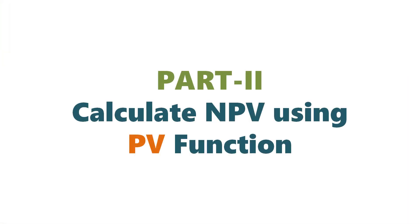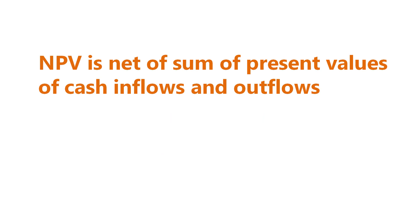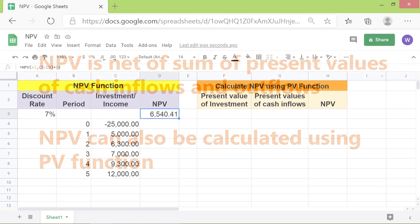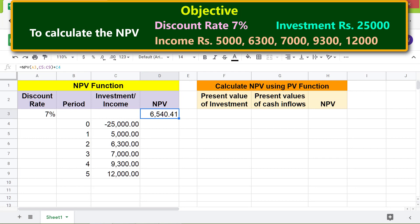Part two: calculate NPV using the PV function. NPV is the net of the sum of present values of cash inflows and outflows, and it can also be calculated using the PV function. Here is a demo of that calculation. If you have not used the PV function before, please refer to the PV function tutorial. The present value of the investment is rupees 25,000.